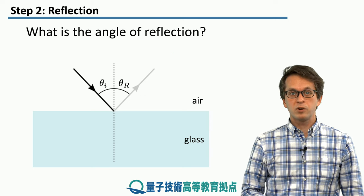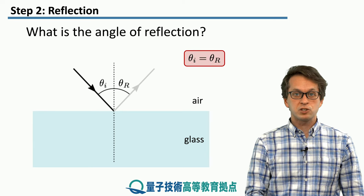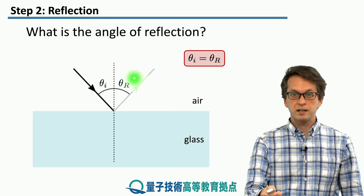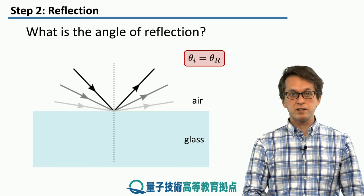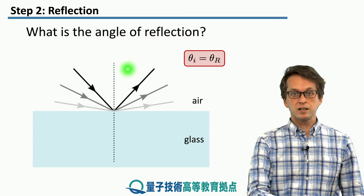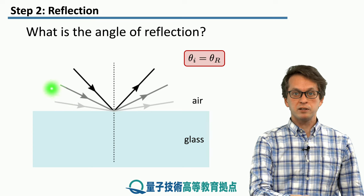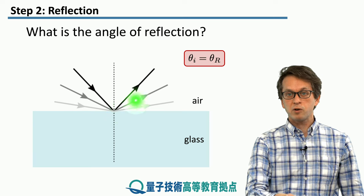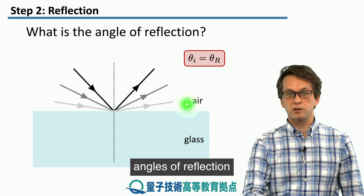What is the angle of reflection? That's very simple. The angle of reflection is just the angle of incidence. So θ_i equals θ_R. For example, if we keep increasing the angle of incidence, starting with this light ray, then a different light ray, and then a different one, all with different angles of incidence, the corresponding angles of reflection are also increasing.